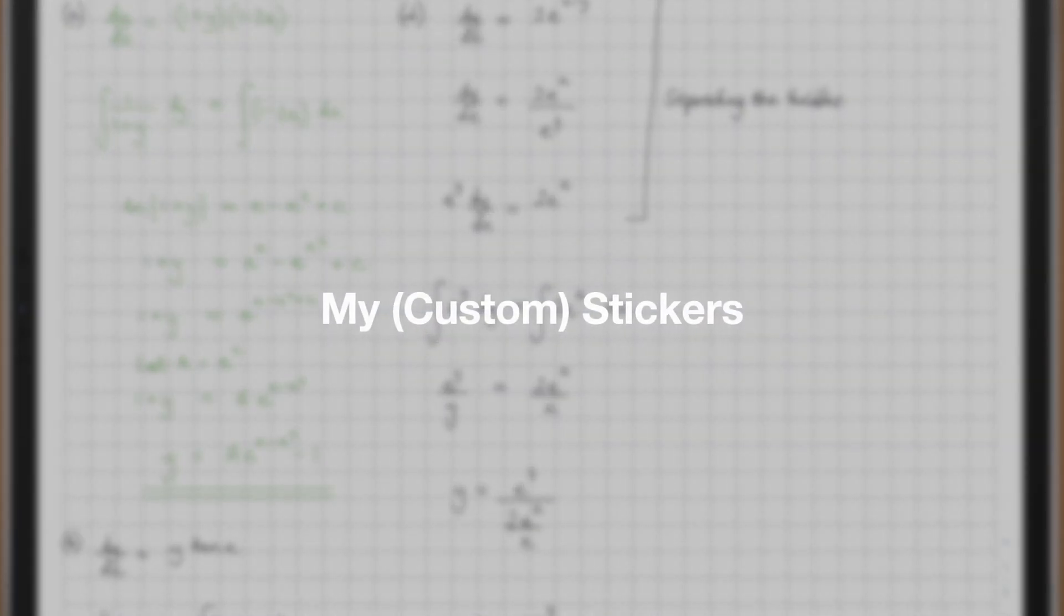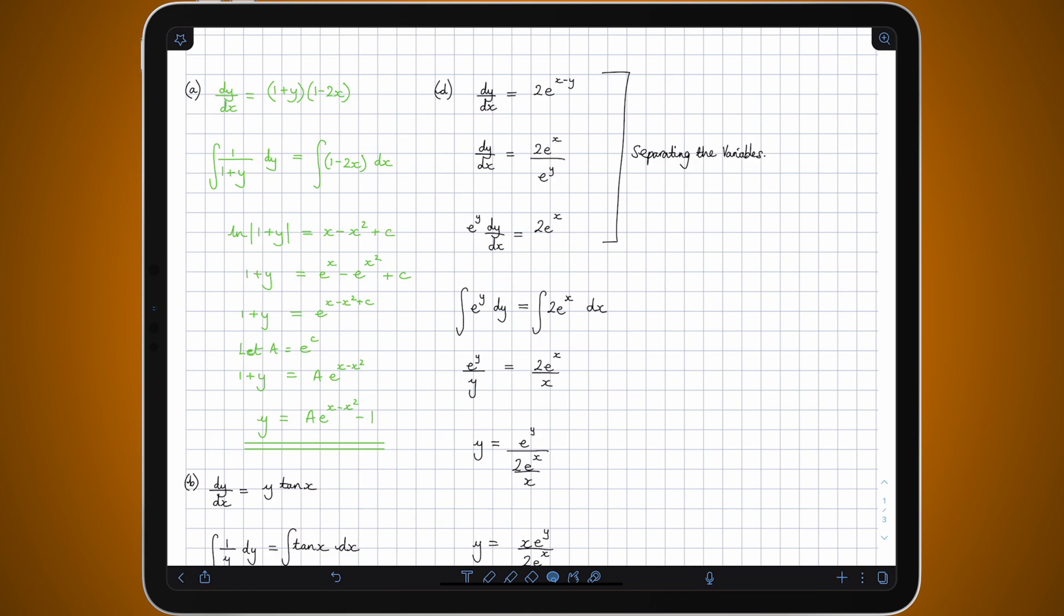So the next feature in this update is my stickers which allows you to create your own custom stickers by basically just drawing them. So if I go onto the pen tool and I'll try and draw an apple logo here, not a very good apple logo but it'll have to do for now, just add a little leaf at the top.